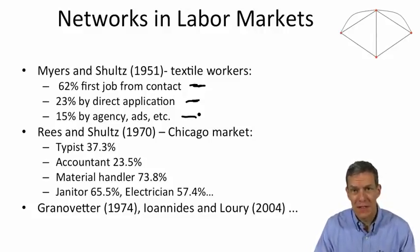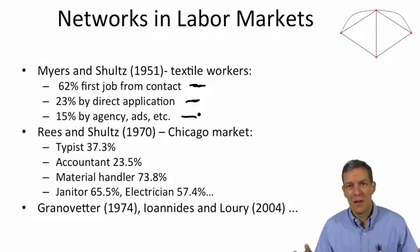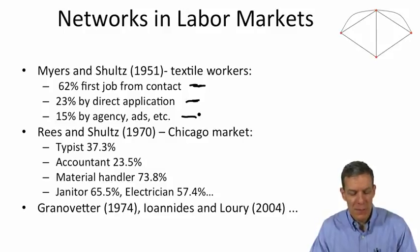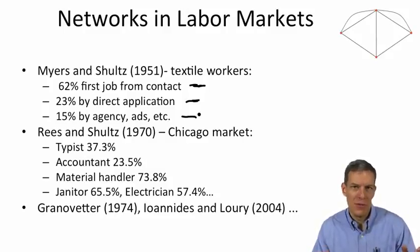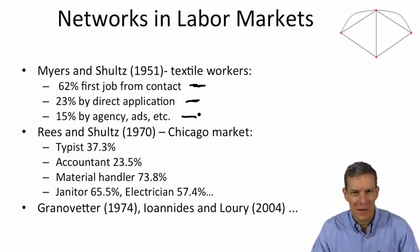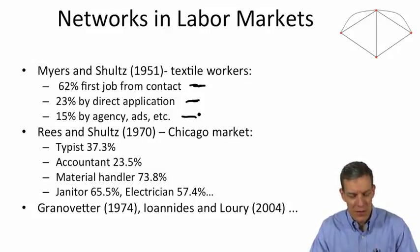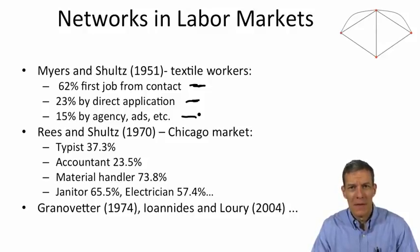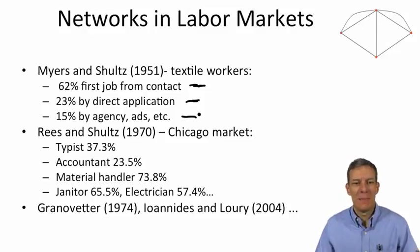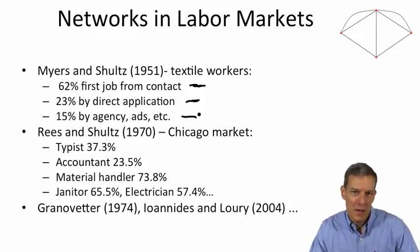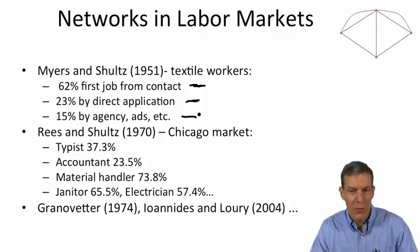Later studies, like Rees and Schultz in the 1970s, found it wasn't simply textile workers finding jobs through contact networks. Across different professions: typists 37%, accountants 23.5%, material handlers 73.8%, janitors 65%, electricians 57%. There was a range from roughly 20% to 80%, but overall, word of mouth and being connected to individuals was an important way of finding jobs in whatever profession you were in. Granovetter's work on this is quite influential, and there's a nice survey by Unitas and Lowry in 2004.